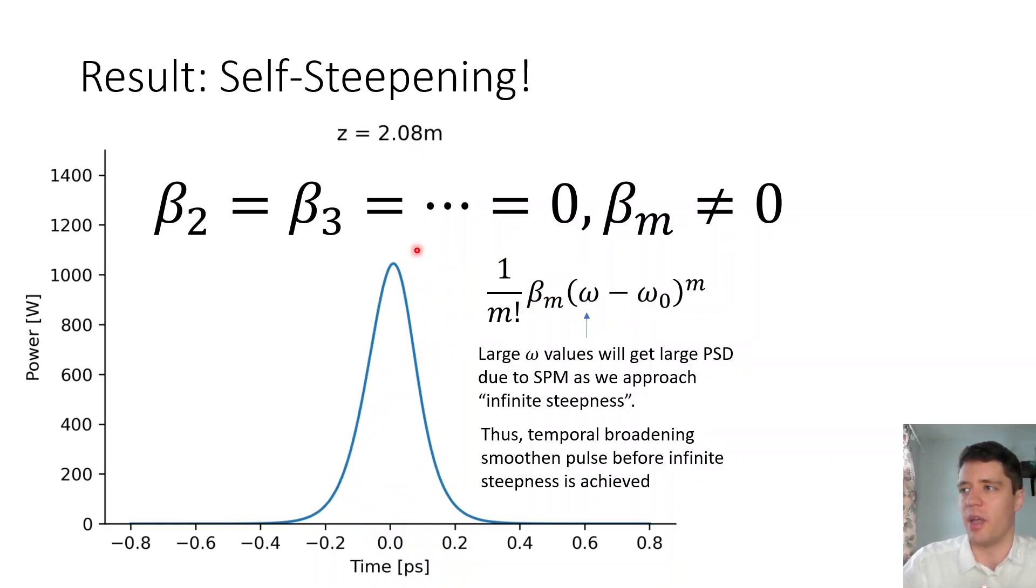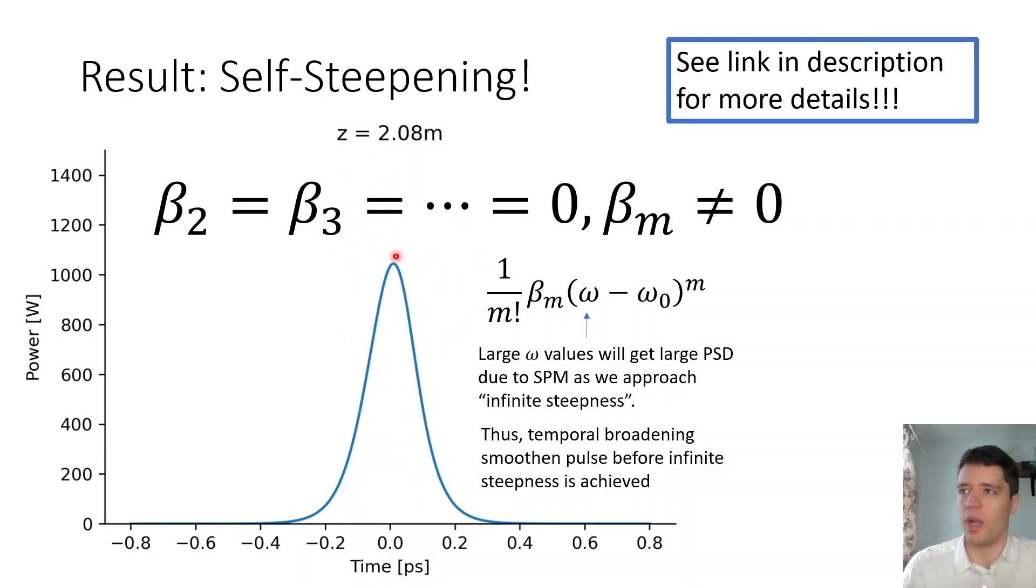So in other words, before we actually hit this point of infinite steepness and we get onto this sort of spiky nonsense, the pulse is going to sort of broaden out and smooth out in the time domain before anything gets completely out of hand. Now, I've linked a quick note in the description, which hopefully should explain this in a bit more detail, so feel free to check that out if you have the time. Anyway, that was just a quick video on self-steepening. Feel free to check out some of my other work over here and stay tuned for more. Bye-bye.